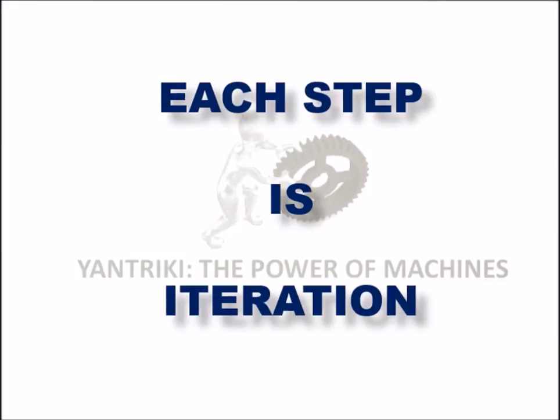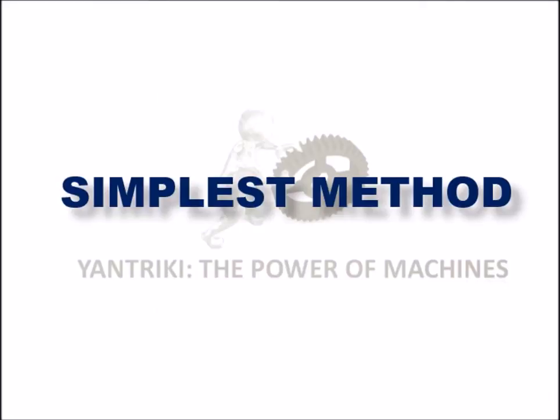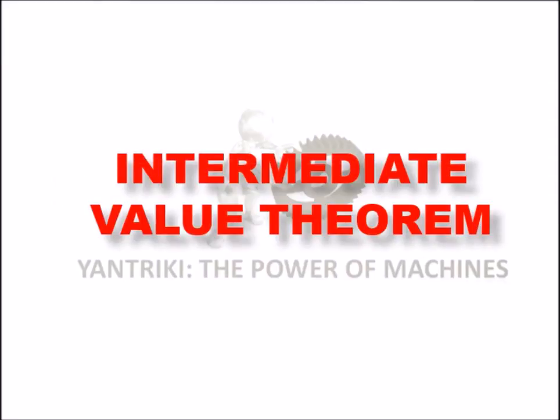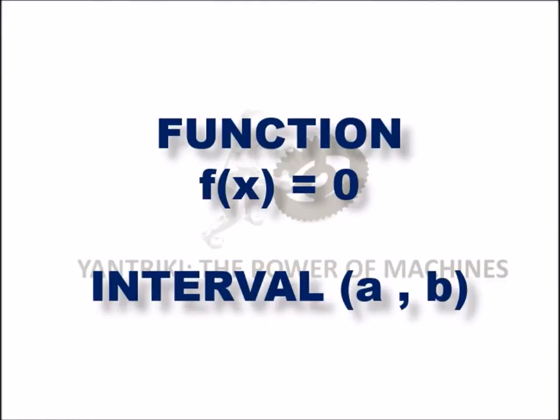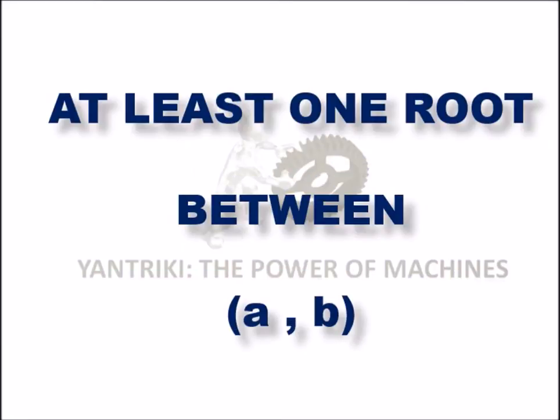The bisection method is one of the simplest iterative methods. It is based on repeated application of the intermediate value theorem, according to which, if there is a function f(x) = 0 in the interval [a, b], then there exists at least one root of f(x) between a and b.